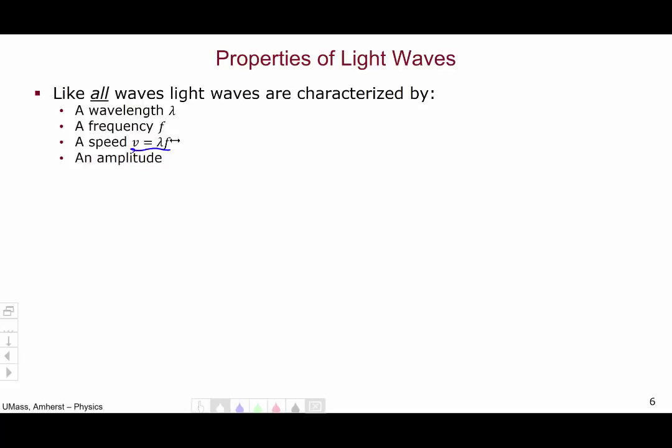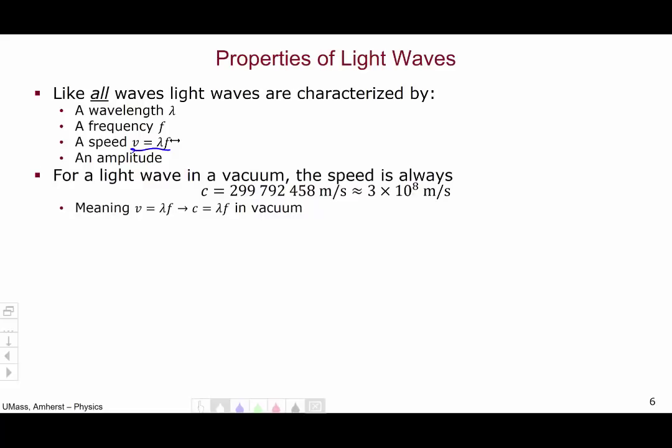However, there are some important unique characteristics of light waves. For a light wave in a vacuum, the speed is always the same. It's always the speed of light, 2.99792458 meters per second, which we in this class will always approximate to 3 times 10 to the 8 meters per second. Close enough. So in a vacuum, v equals lambda f turns into c equals lambda f because all light waves, regardless of their wavelength or frequency or amplitude, travel at this same fundamental speed.